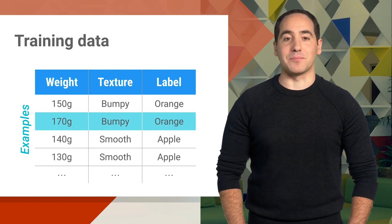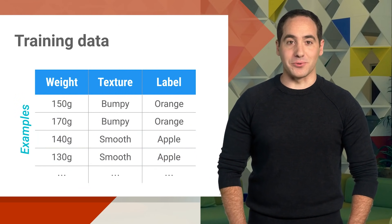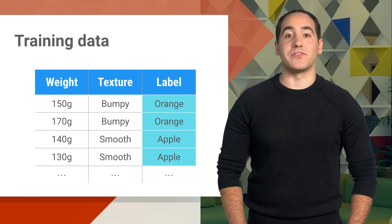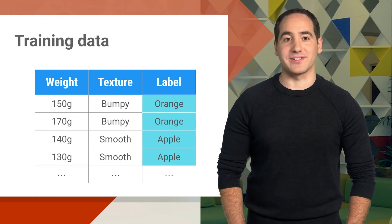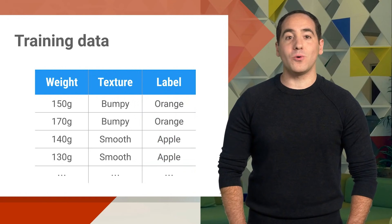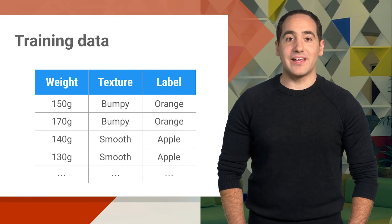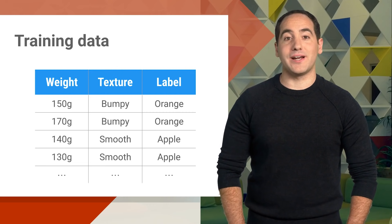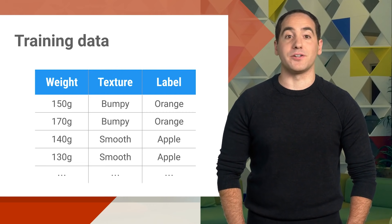Each row in our training data is an example. It describes one piece of fruit. The last column is called the label. It identifies what type of fruit is in each row, and there are just two possibilities, apples and oranges. The whole table is our training data. Think of these as all the examples we want the classifier to learn from. The more training data you have, the better a classifier you can create.